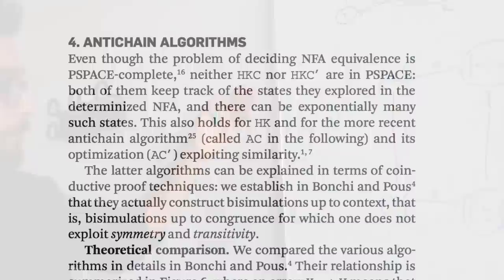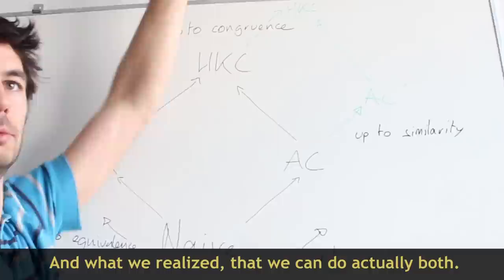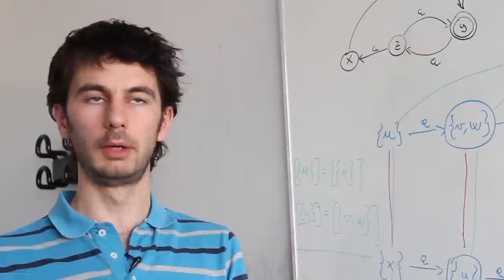The innovation of Doctors Bonchi and Pous was to discover how these optimization techniques relate to each other and then to combine them. And what we realized is that we can do actually both—we can use both techniques together and we get what we call up to congruence, which is even more powerful in the sense that it can cut even more branches in the exploration.